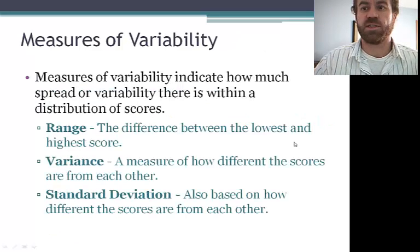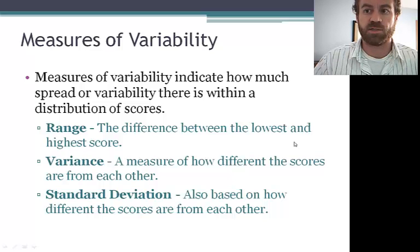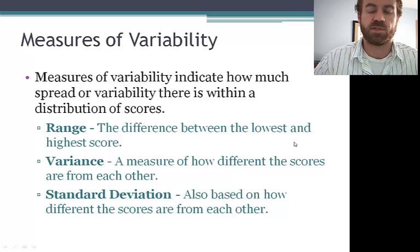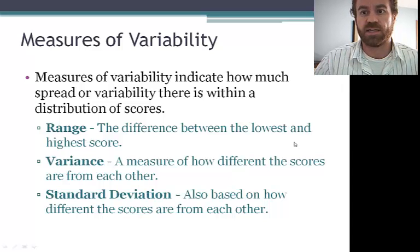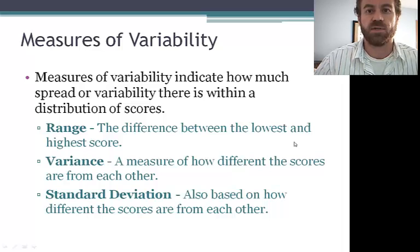Measures of variation then indicate how much spread or variability there is within a distribution of scores. Our three measures of variation are range, variance, and standard deviation. And hopefully you've had or you've at least heard of these before. The range is the difference between the highest and the lowest score. So let's say in a given classroom, what is the difference between the tallest and the shortest student? The variance is the measure of how different each score is from the other scores. And the standard deviation tells us, on average, how different are the scores from each other, or in this case, what is the average difference in height for every student in the class? It's the average, not the actual difference.